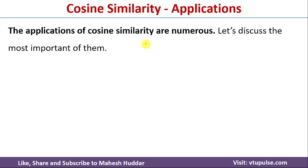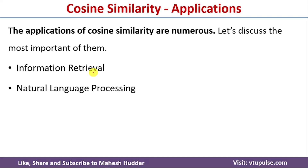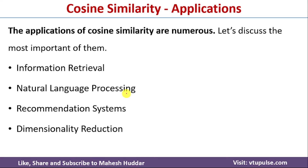There are many applications of cosine similarity in the real world. We will discuss some of the important ones: the first application area is information retrieval; cosine similarity is also used in natural language processing, in recommendation systems, as well as in dimensionality reduction. We will try to understand each of these applications one by one.